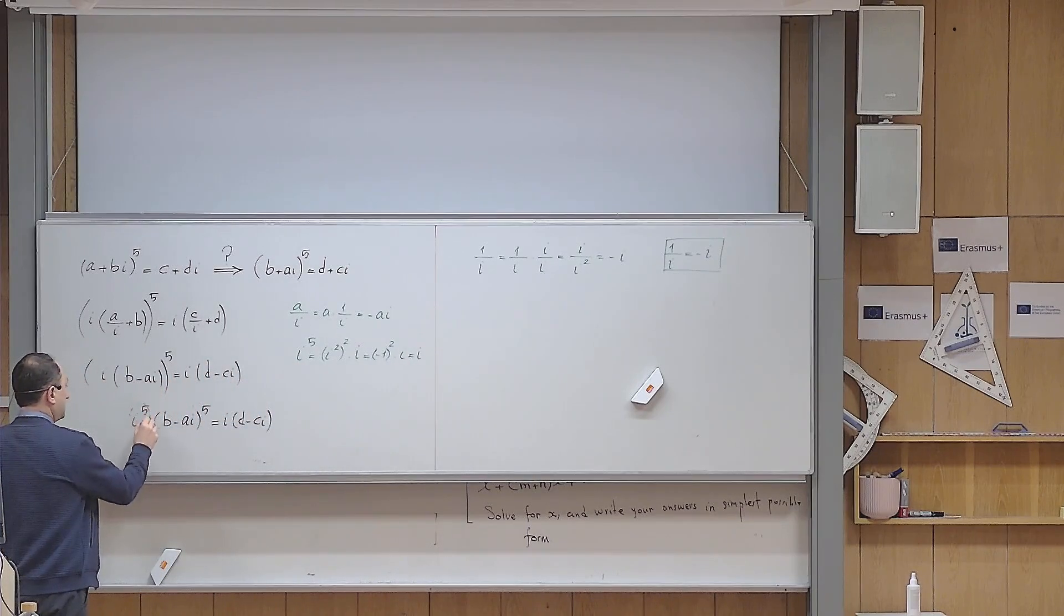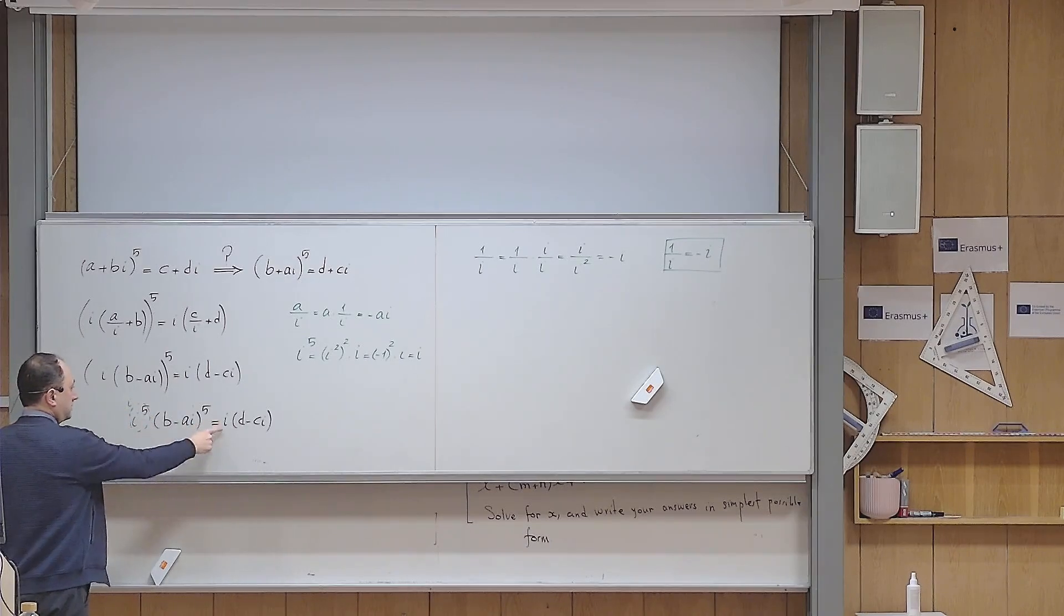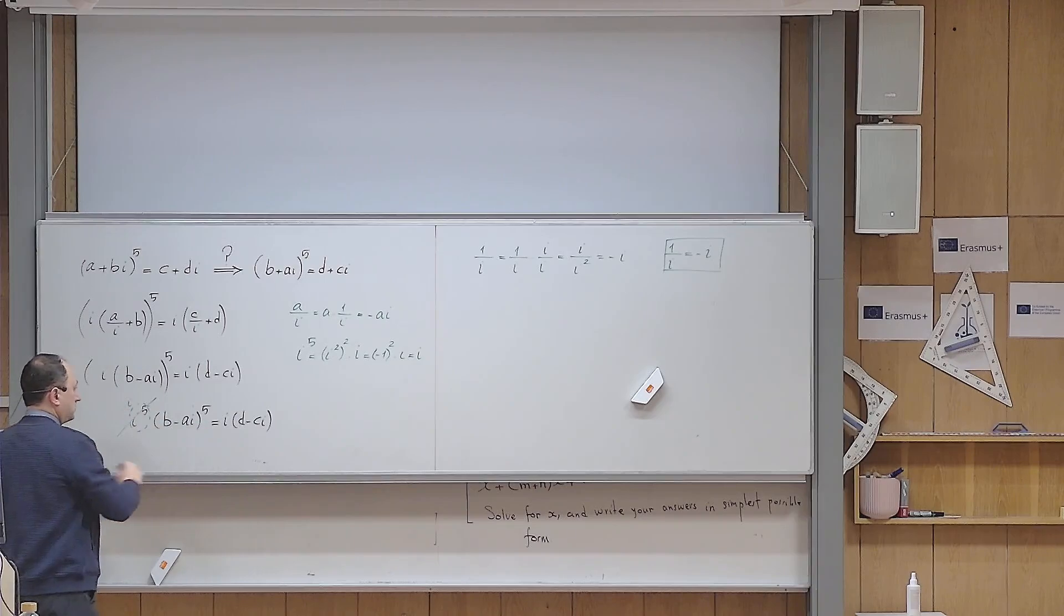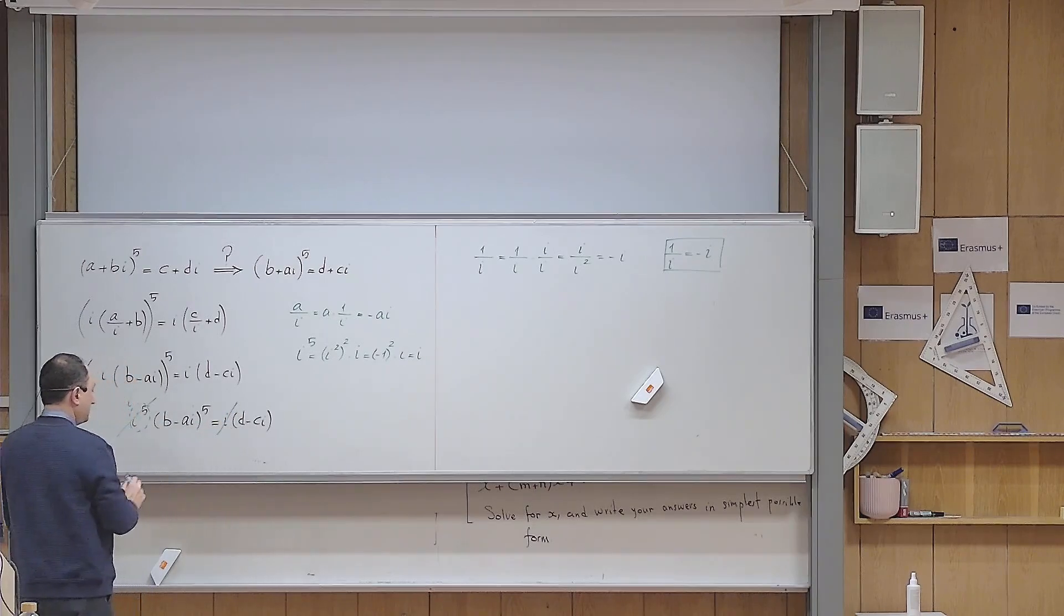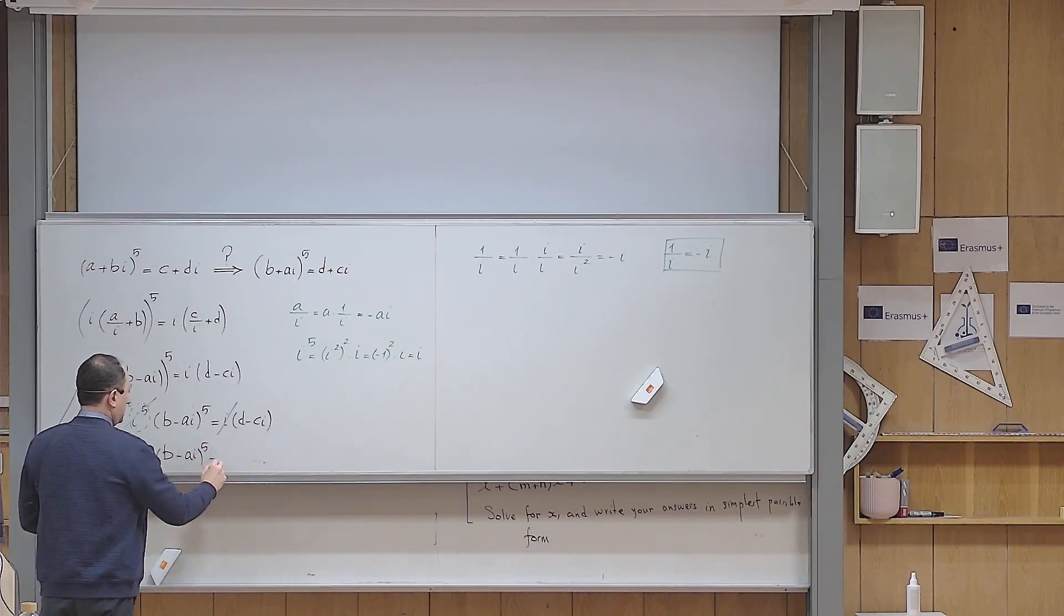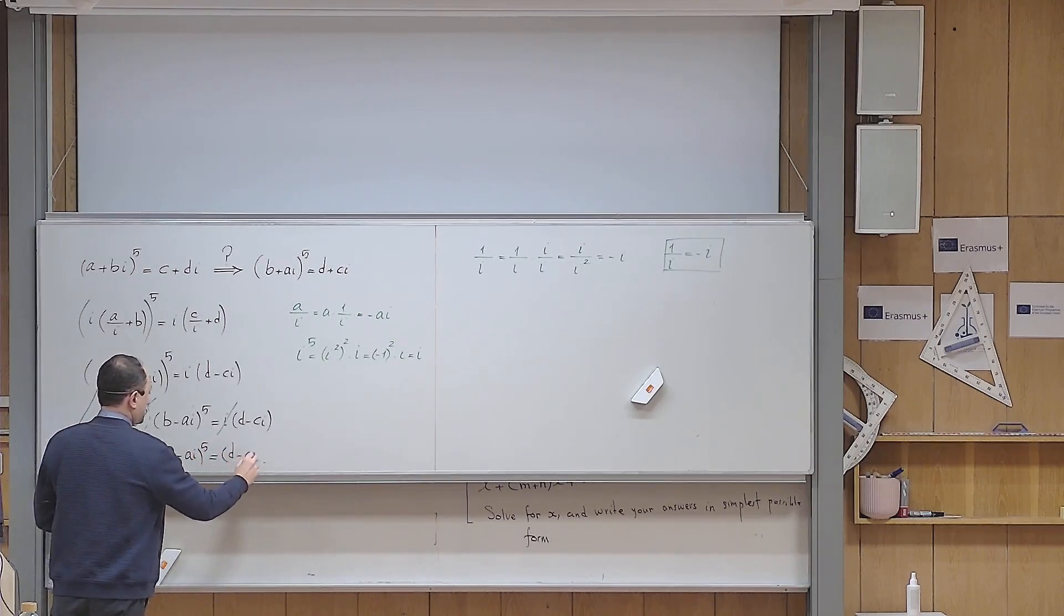Okay, so this is indeed nothing except i. So this i on the left and that i on the right, they can be cancelled. And what is left for me is (b minus ai) to the power of 5 equals d minus ci.